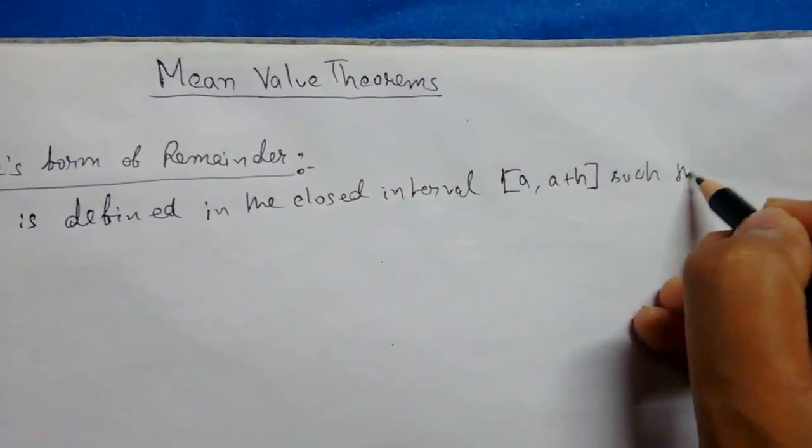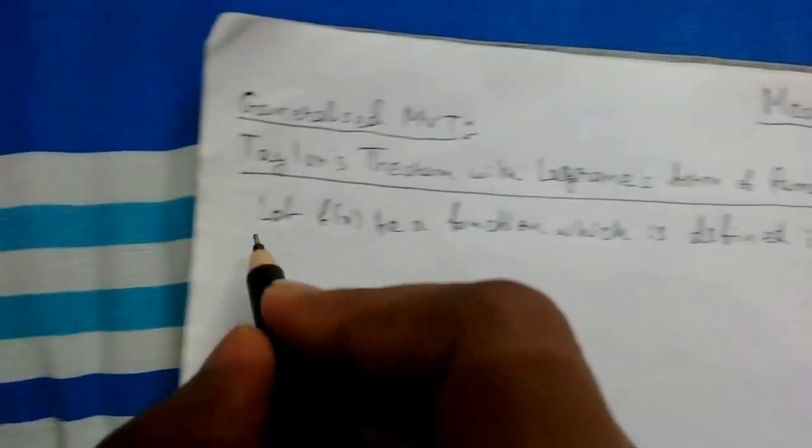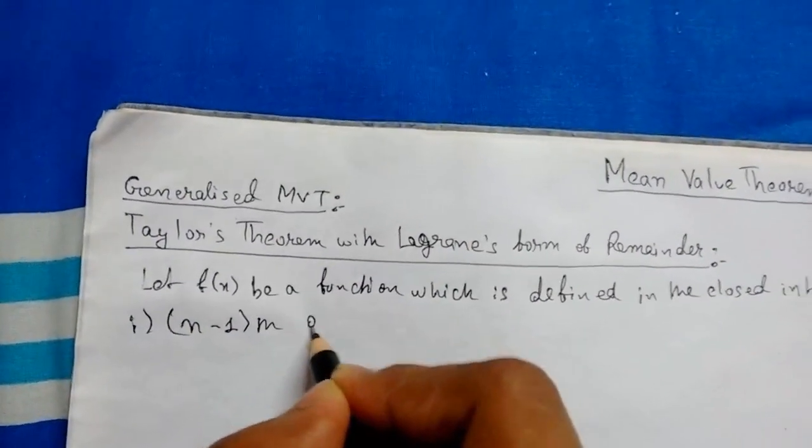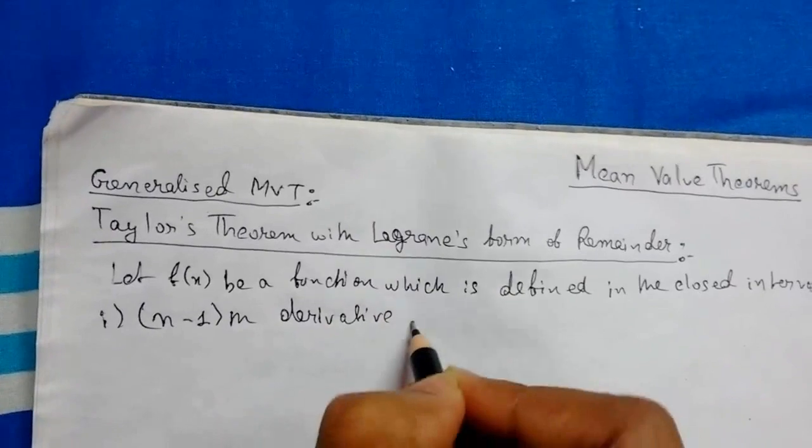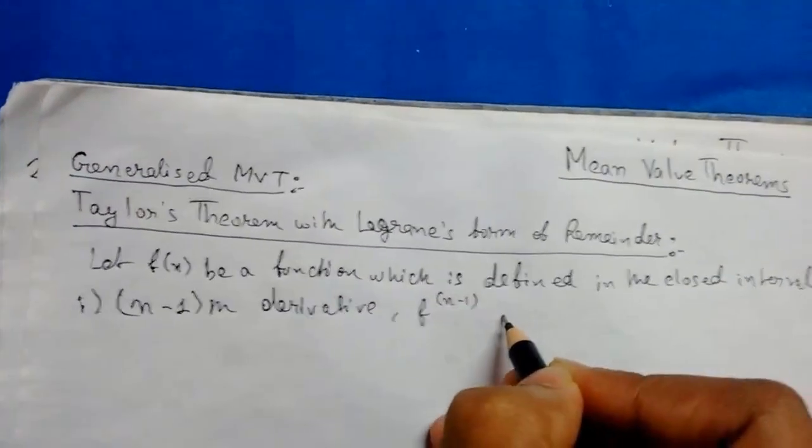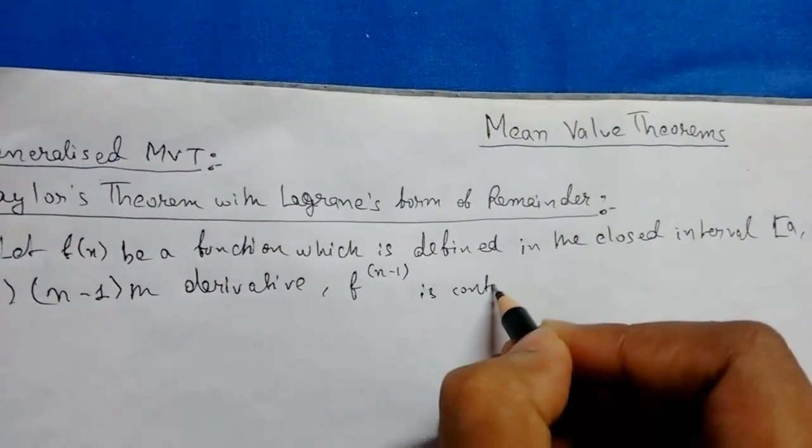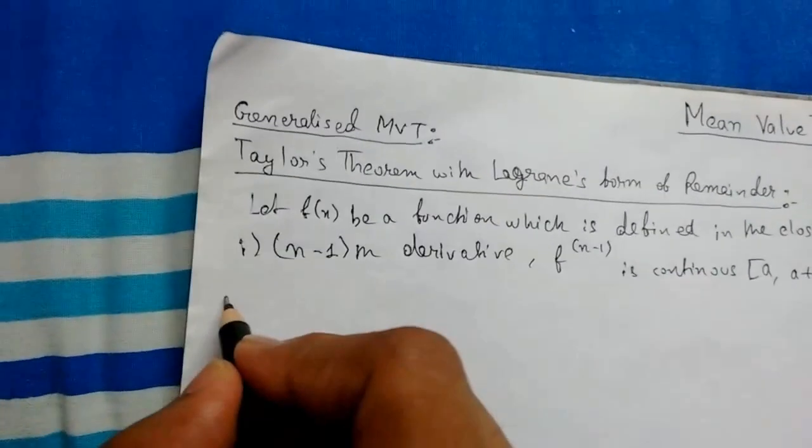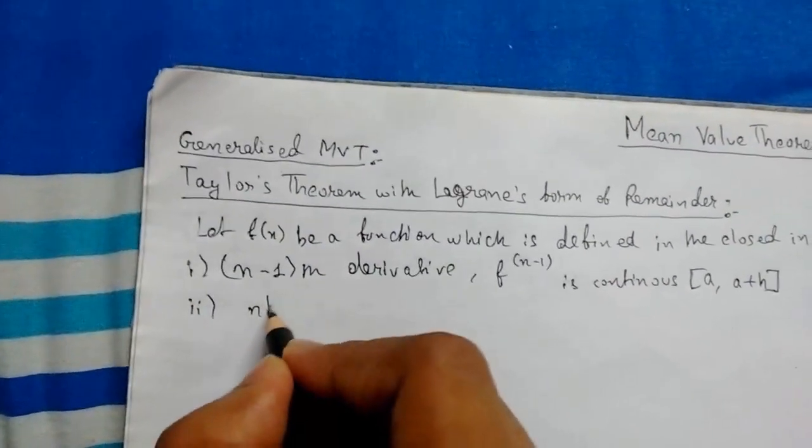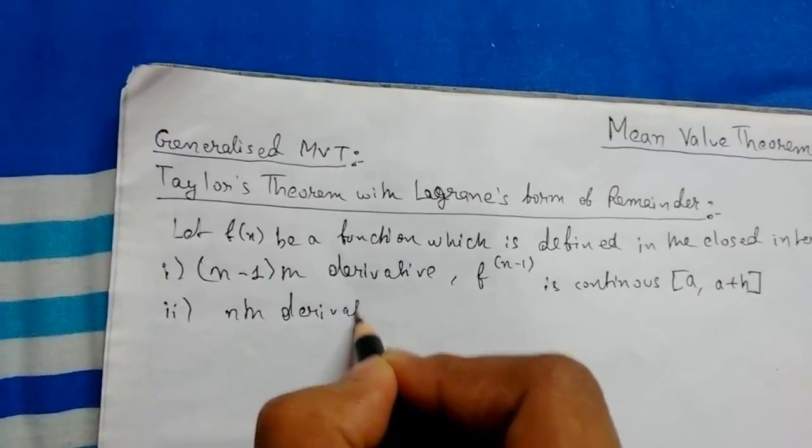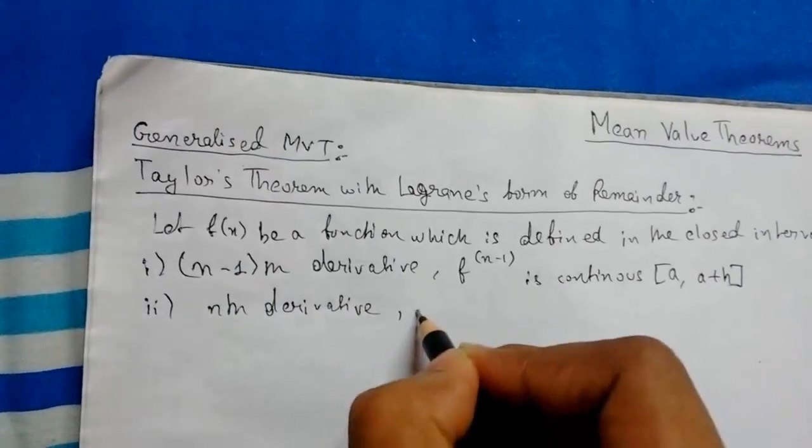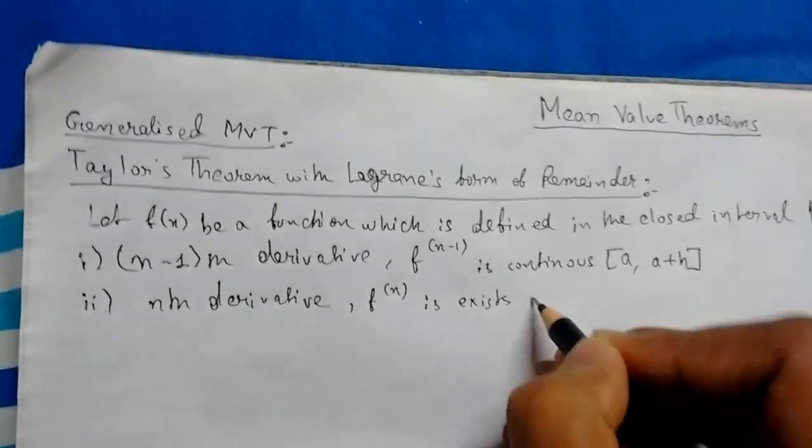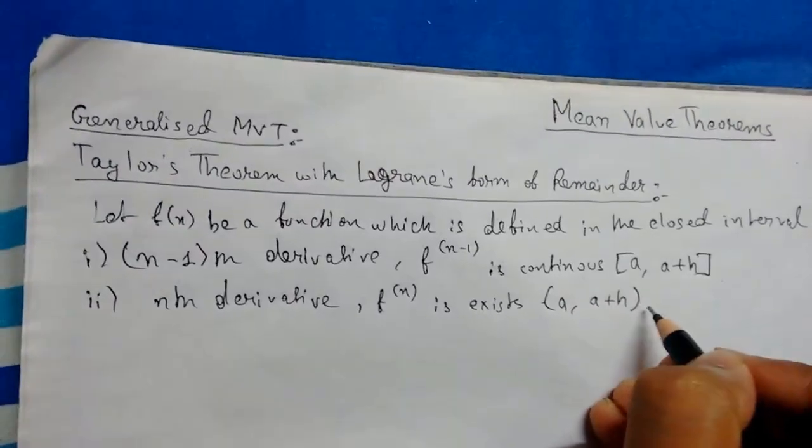Number one: (n-1)th derivative, that is f^(n-1), is continuous in the closed interval [a, a+h]. Number two: nth derivative, that is f^(n), is derivable, that is exists, in the open interval (a, a+h).